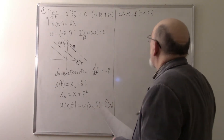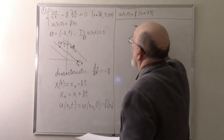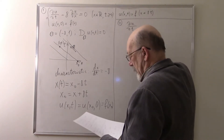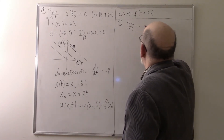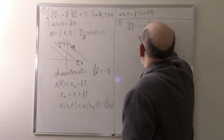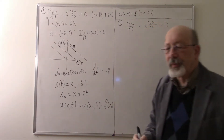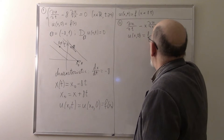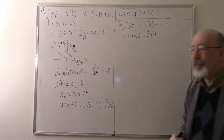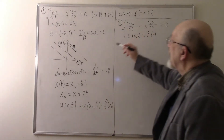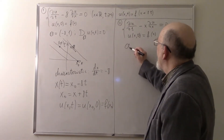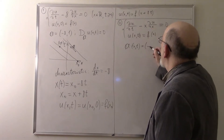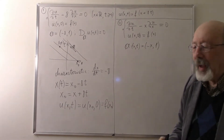Now let me consider a slightly more involved equation. Equation 2: du/dt minus x·du/dx equals 0, with initial condition u(x, 0) equals f(x). Again, we have a vector a along which we differentiate, but now a depends on x: a equals (minus x, 1).